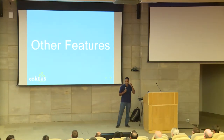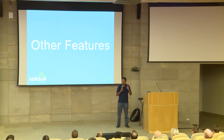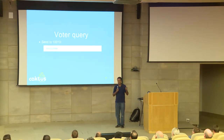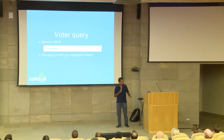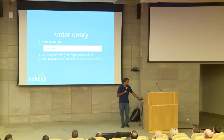I want to briefly run through some of the other features we built into the system. One is a voter query system — the voter could send their national ID to our number and then get a response of what their registration status was.